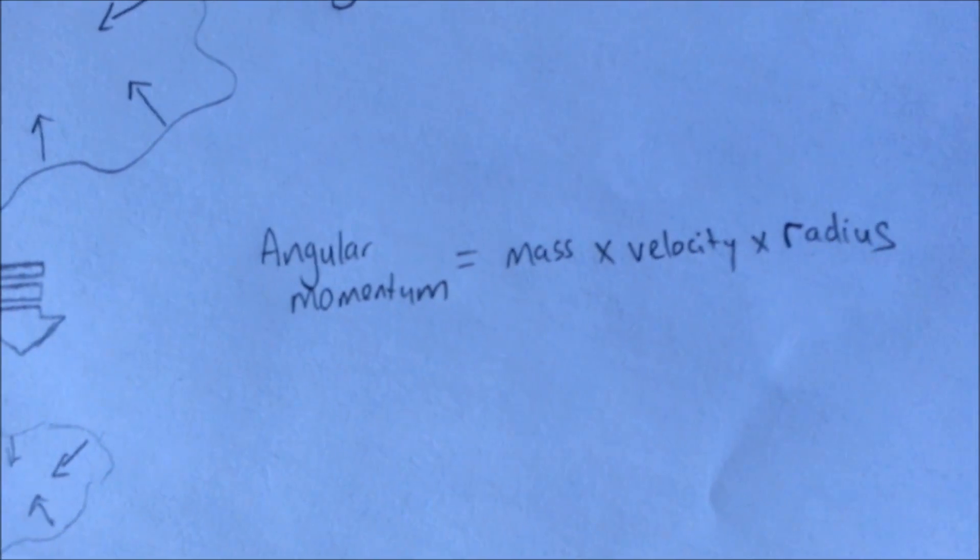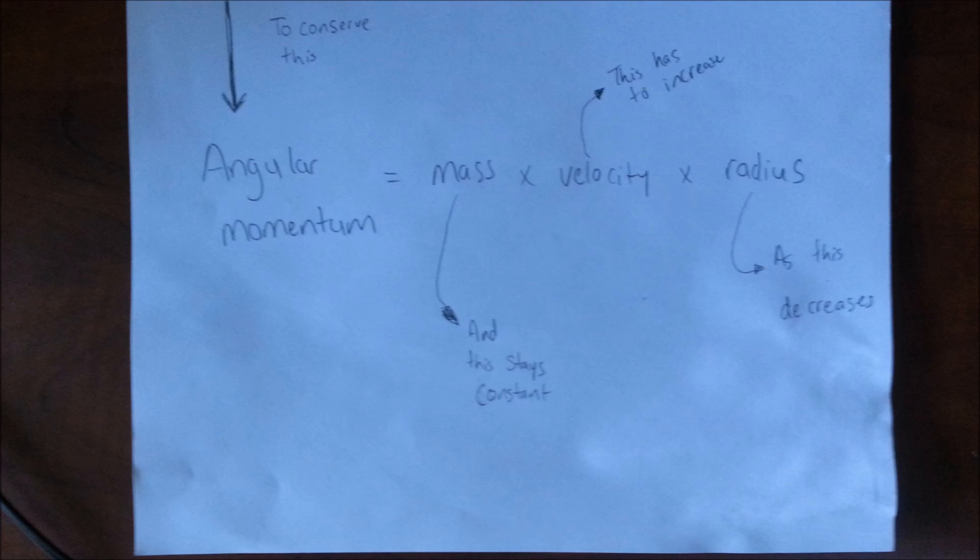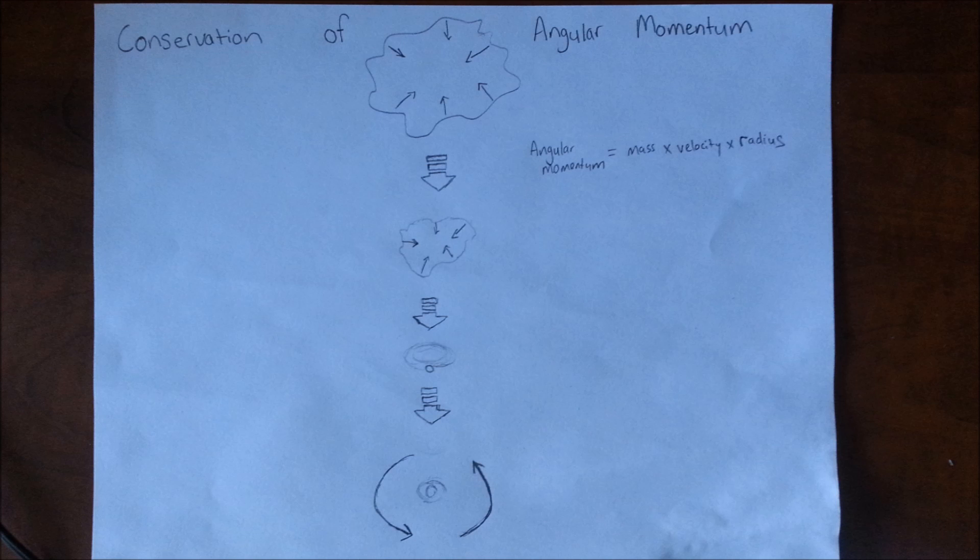Angular momentum equals mass times velocity times radius. So as radius decreases and mass stays constant, velocity would have to be increased in order to conserve angular momentum.